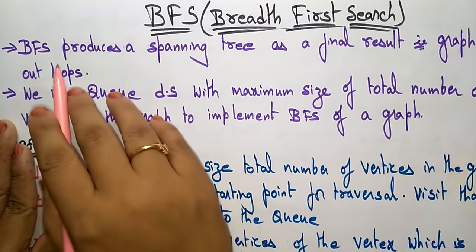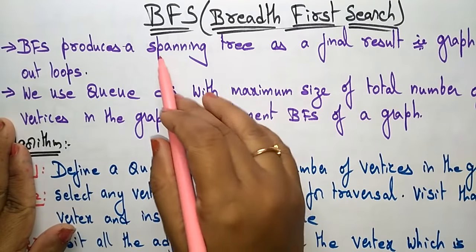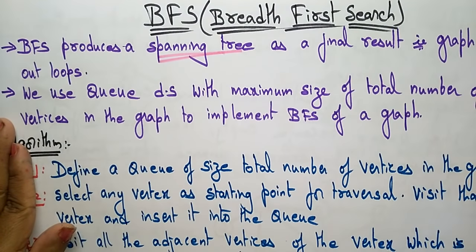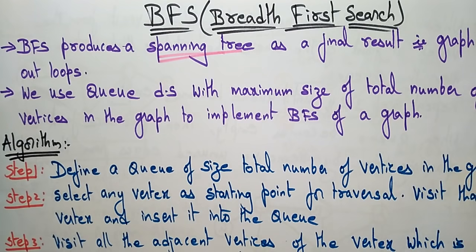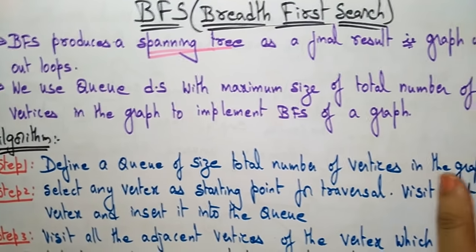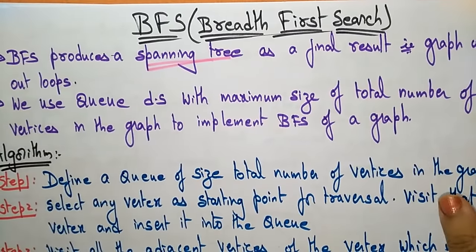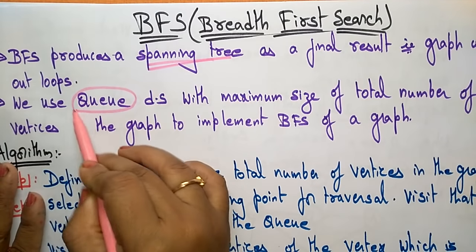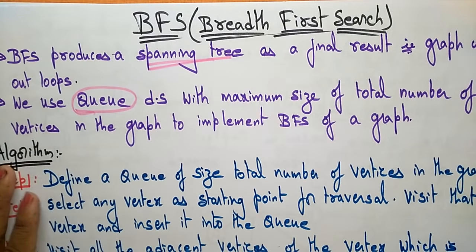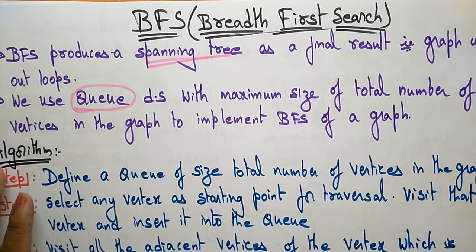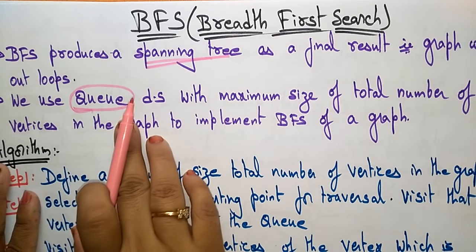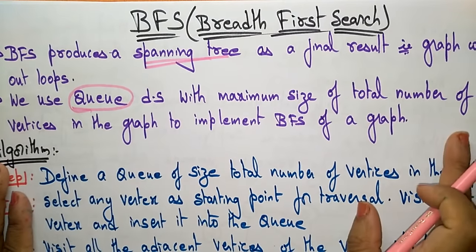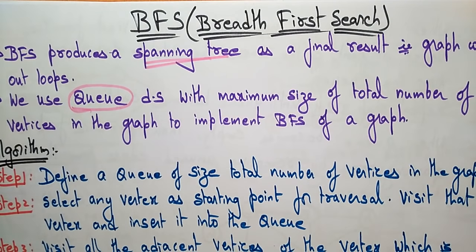BFS also produces a spanning tree. The final result of BFS is a spanning tree, meaning a graph without loops. We use the queue data structure, whereas in DFS we use a stack. In BFS, the queue has a maximum size equal to the total number of vertices present in the graph.